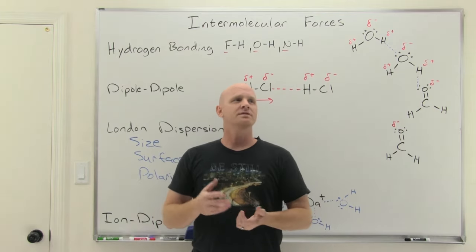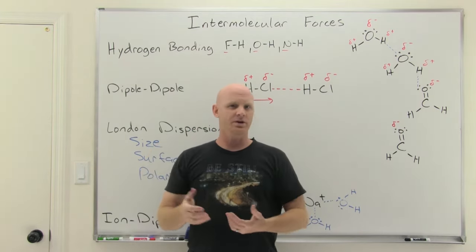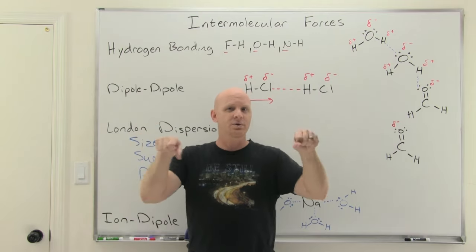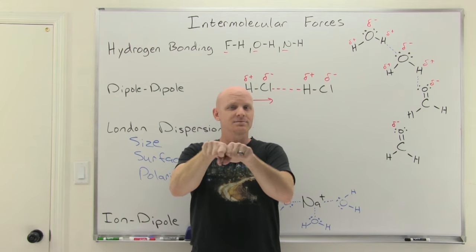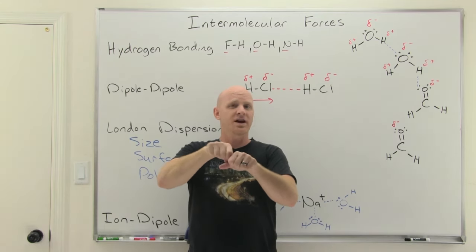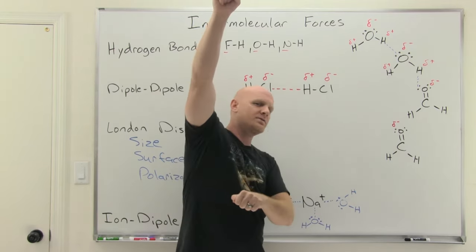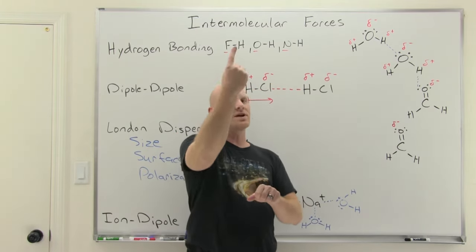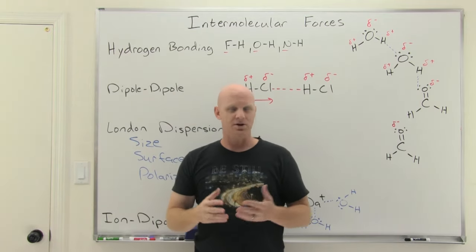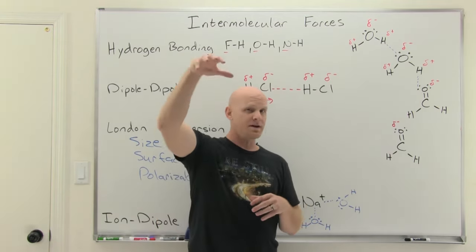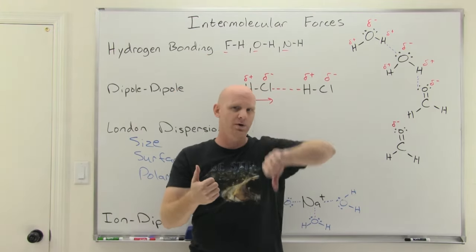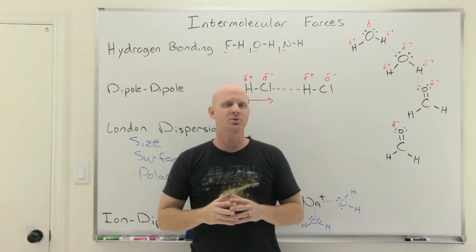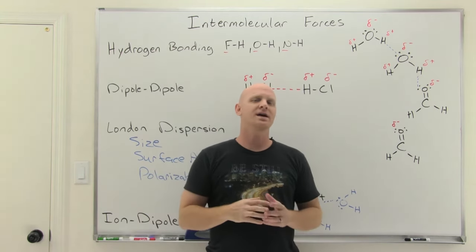Higher intermolecular forces lead to higher boiling point, higher melting point, higher viscosity, higher surface tension. The one property that gets lower is vapor pressure. Vapor pressure is a measure of the number of molecules that have made it into the vapor phase around a liquid. The stickier the liquid molecules, the harder it is to break away and get into the vapor phase, and the lower the vapor pressure. So with higher intermolecular forces, you end up with lower vapor pressure. The property we'll compare most often in organic chemistry is boiling point.